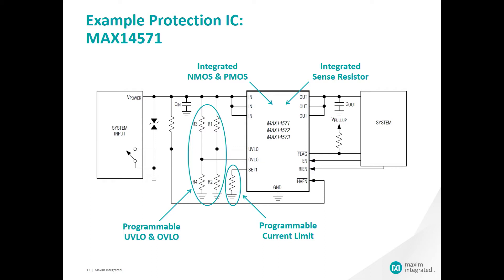The HVEN bar pin is a high voltage capable enable input. Drive HVEN low for normal operation, and drive HVEN high to disable the device. HVEN has up to 36 volt over voltage protection on this device. The RIEN pin designates the reverse current enable input. Connect this pin to ground to disable reverse current flow protection, or connect it to logic high to activate reverse current flow protection.